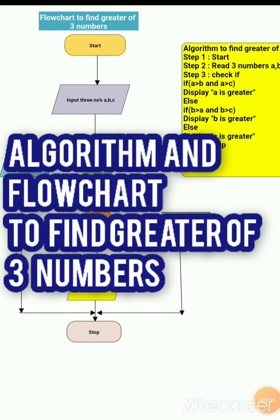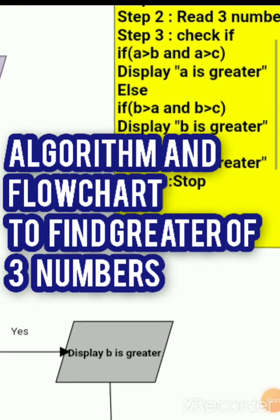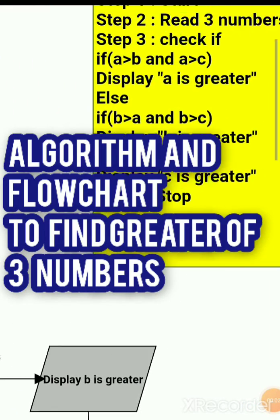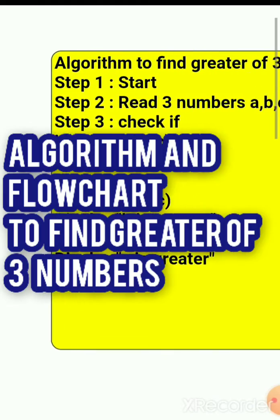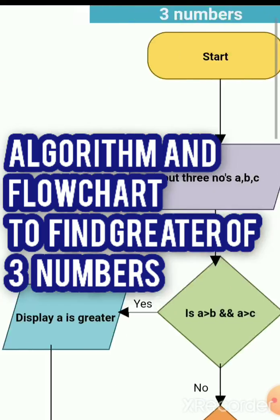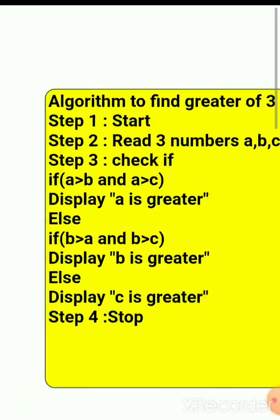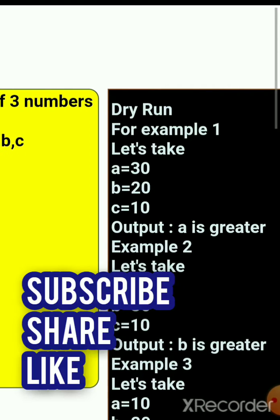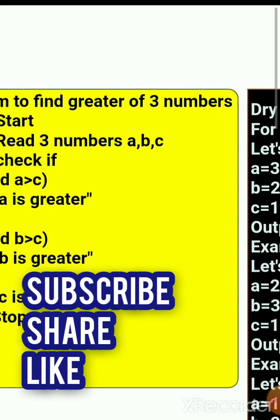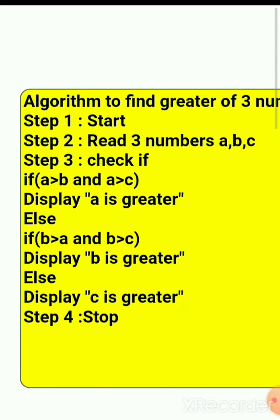We'll draw a flowchart and write an algorithm to find the greatest of three numbers. This covers the algorithm, the flowchart, and a dry run — meaning we'll roughly execute the program without running it on a computer. Let's see the algorithm here.